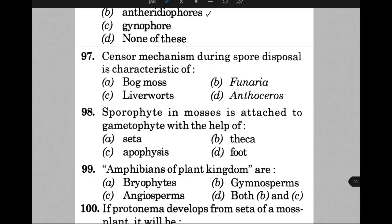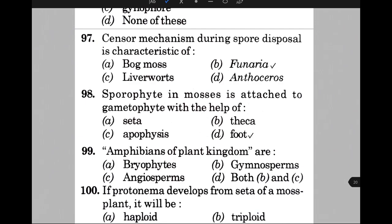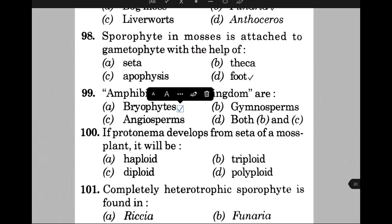Sporophyte in mosses is attached to gametophyte with the help of — the answer is D, that is foot. Amphibians of the plant kingdom are — of course, bryophytes. If protonema develops from the seta of a moss plant, it will be — the answer is C, that is diploid.